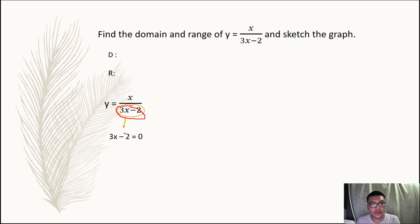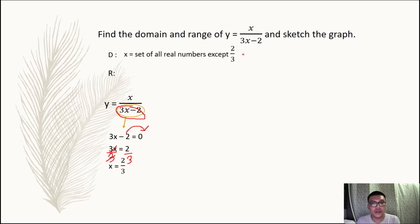Then move the negative 2 to the other side, we obtain 3x equals 2. Now solving for x, we divide both sides by 3, we obtain x equals 2 thirds. Therefore our domain is x set of all real numbers except 2 thirds.